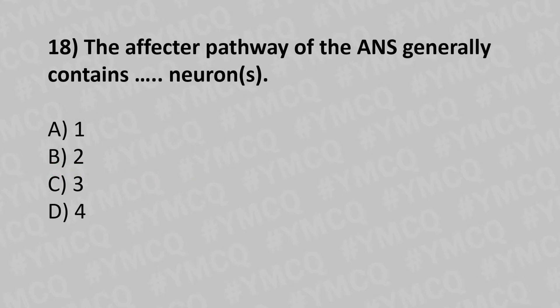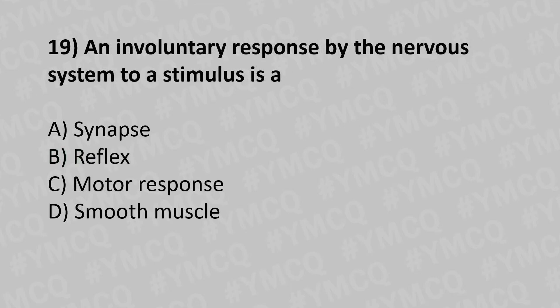Moving to our eighteenth question. The efferent pathway of the ANS generally contains dash neurons. Option A: one set of neurons. Option B: two sets of neurons. Option C: three sets of neurons. Option D: four sets of neurons. And the answer is option B: two sets of neurons.